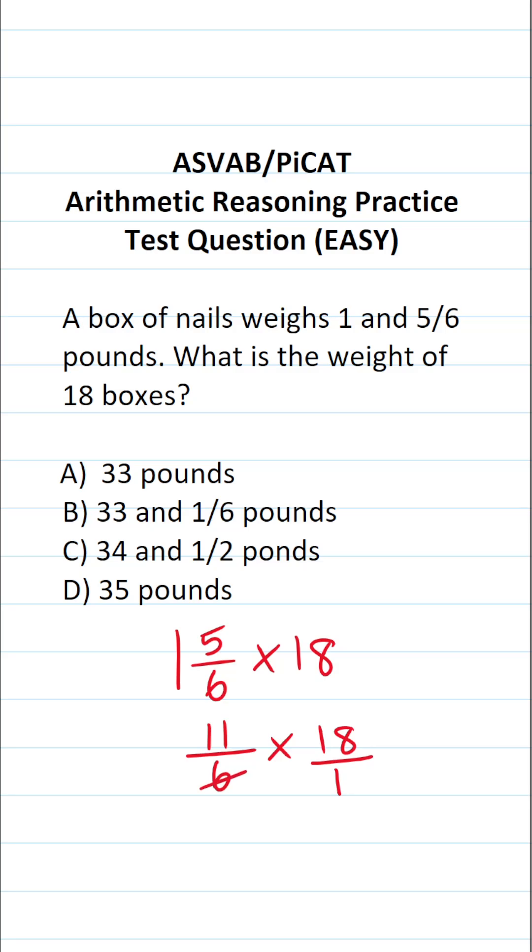I can say 6 goes into 6 one time, 6 goes into 18 three times. This becomes 11 over 1, 11 divided by 1 is just 11, times 3 over 1, 3 divided by 1 is just 3, 11 times 3 is 33. So the answer to this one is A, 33 pounds.